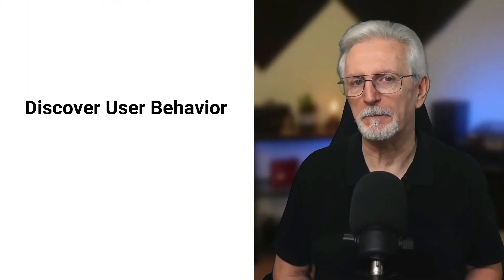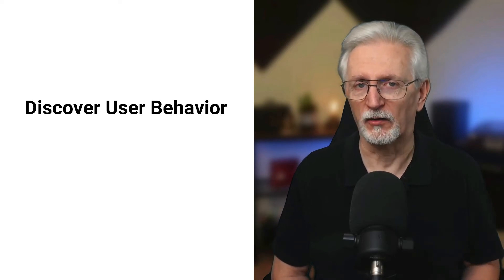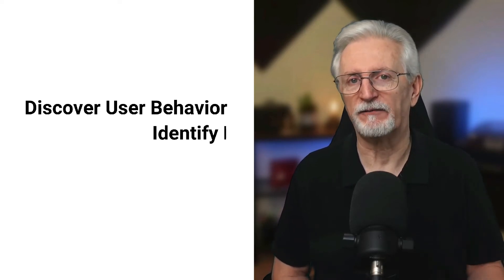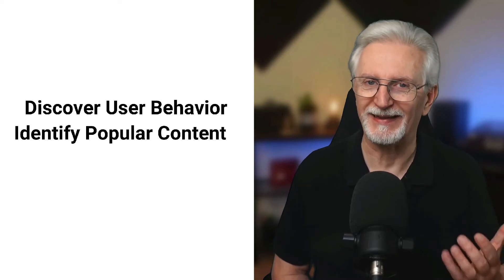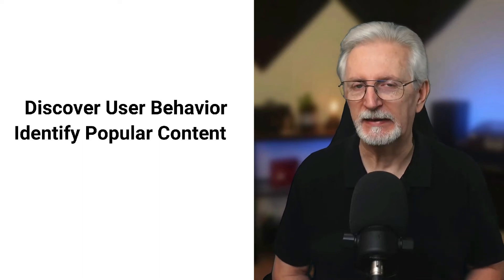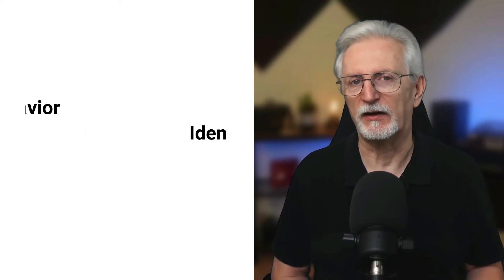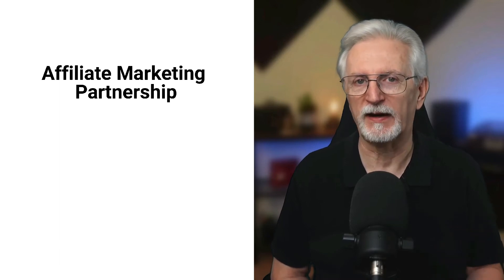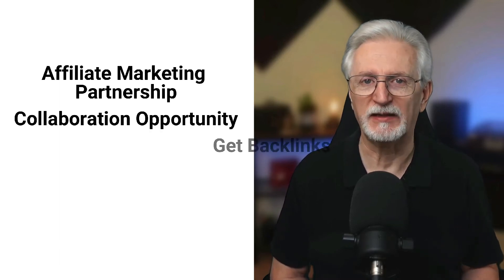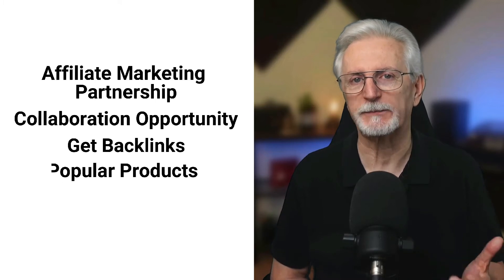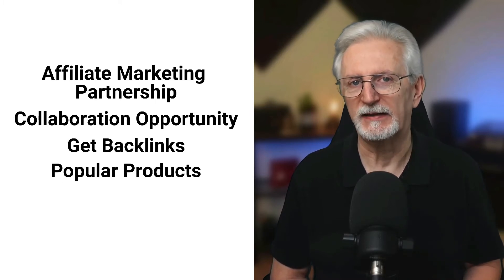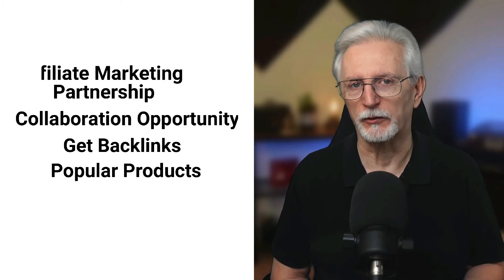Outbound links, also known as external links, are the links on your site that lead your visitors to another website. By tracking your outbound links, you can find out how people are behaving on your site and which links they click on to exit. You can identify what kinds of content people are looking for and create that type of content on your website. Suppose you're sending a lot of traffic to a specific site — you can reach out to them and form a partnership like starting affiliate marketing, collaborating on a content piece, or getting a backlink. And you can discover which products your visitors like the most and promote those products more on your site.